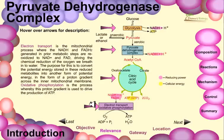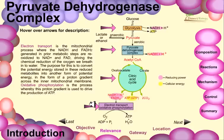The large ATP-generating machine — the electron transport system — is a mitochondrial process where the NADH and FADH2 generated in the prior metabolic steps are oxidized to NAD+ and FAD, driving the reduction of the oxygen we breathe into water. The terminal electron acceptor in this case is oxygen. The purpose is to convert the potential energy stored in these reduced metabolites into another form of potential energy — a proton gradient across the inner mitochondrial membrane — which the cell can directly use. Oxidative phosphorylation is the process whereby this proton gradient drives the production of ATP.